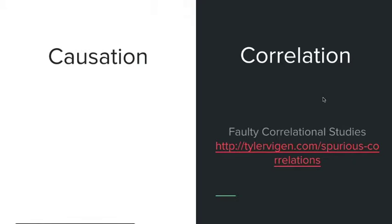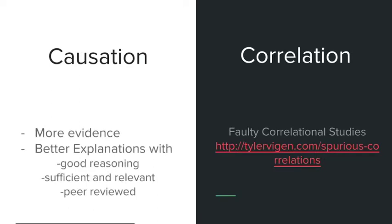Correlation is when two different variables might fit together but don't necessarily cause one another. You have to be careful — if you find a correlation between variables, that might be a clue that they're connected, but it doesn't mean for certain that they are. What we look for in science is causation. To find a true cause and effect relationship, we need more evidence, better explanations with good reasoning, evidence that is sufficient and relevant, and experiments that are peer reviewed.